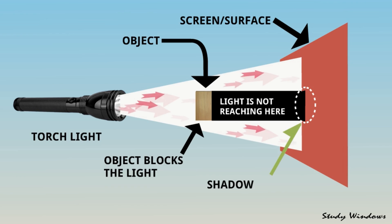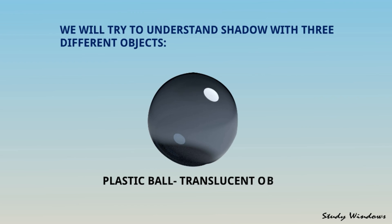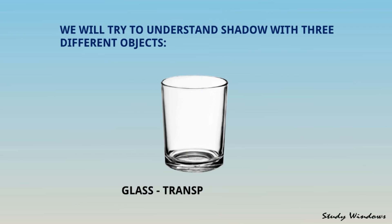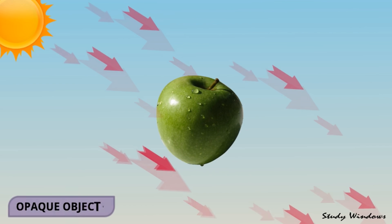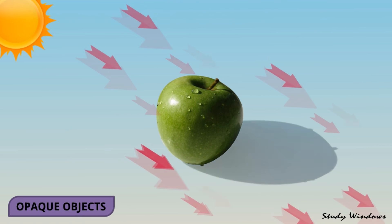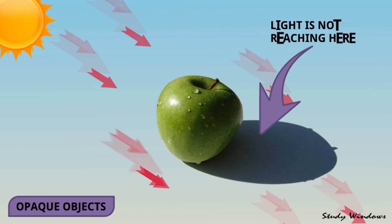We'll try to understand shadow with three different objects: an apple that is an opaque object, a plastic ball that's a translucent object, and a glass that's a transparent object. Apple is an opaque object so it obstructs the light. There's sunlight falling on the apple but particularly in this place light is not reaching here, so dark shadow is formed.